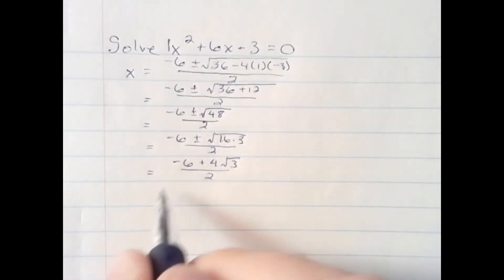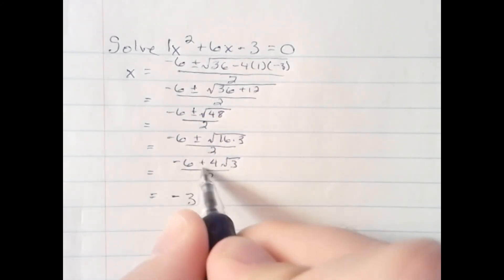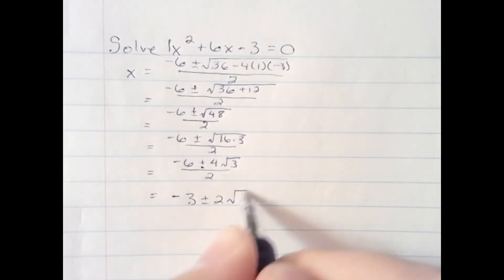Then we can reduce the top and bottom by factoring out a 2, or we could think of it as dividing by 2. So we're left with negative 3 plus or minus 2 radical 3. And that is our solution.